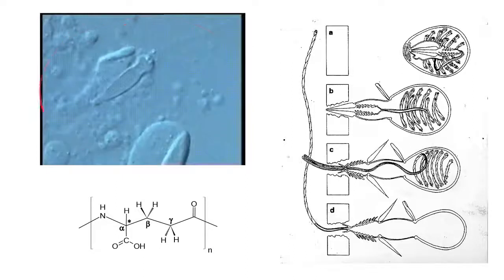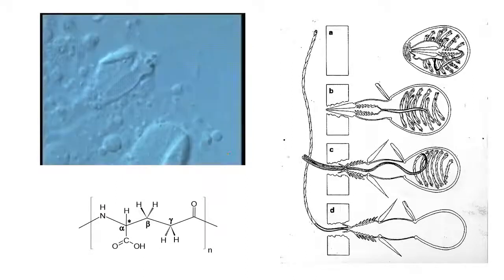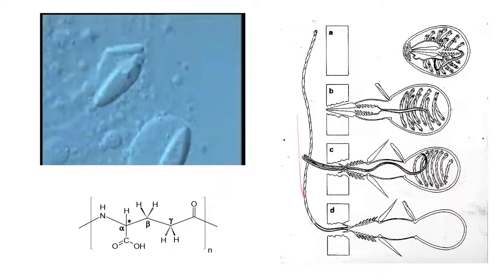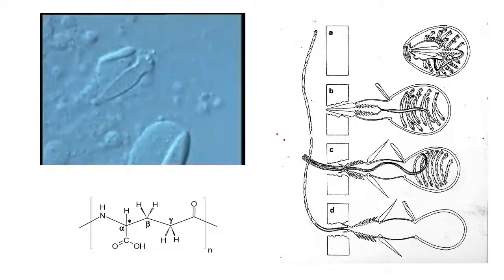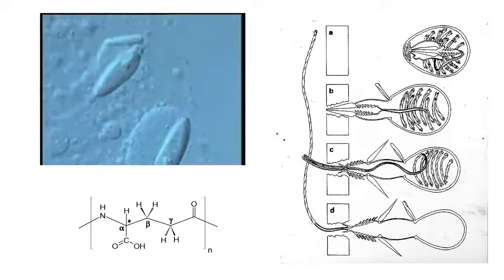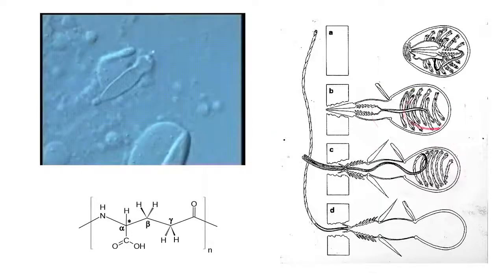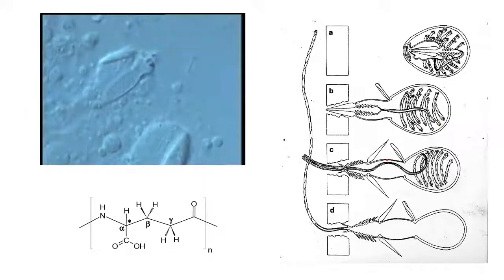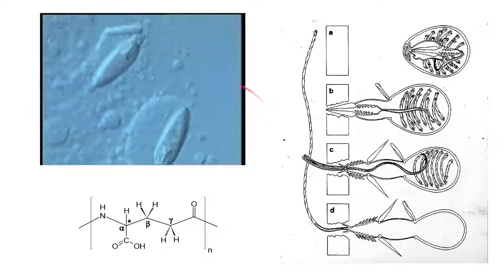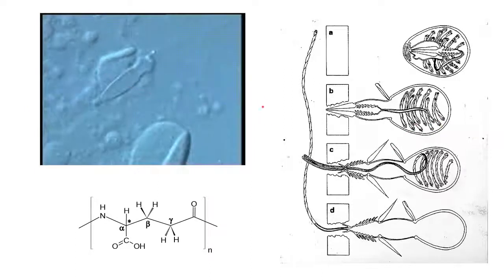On the left here is a short video of a dinoflagellate nematocyst, and on the right is a diagram of a cnidarian nematocyst. Cnidarians include jellyfish, anemones, and the multicellular component of corals, and these stinging cells found in jellyfish and anemones in particular seem to be really similar to these nematocysts found in dinoflagellates.